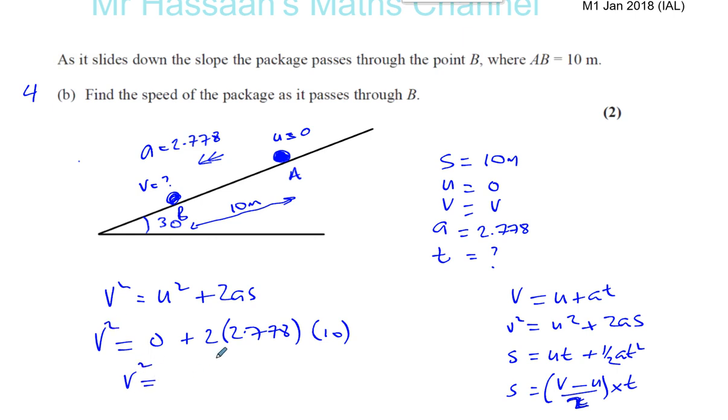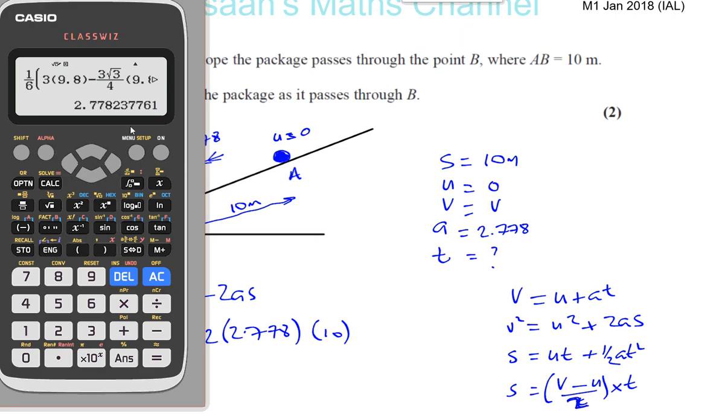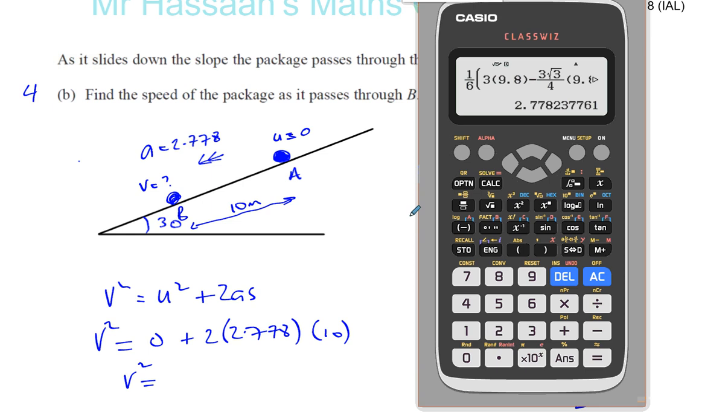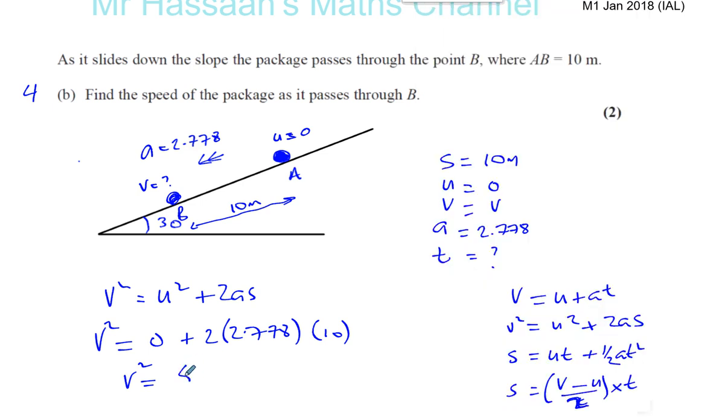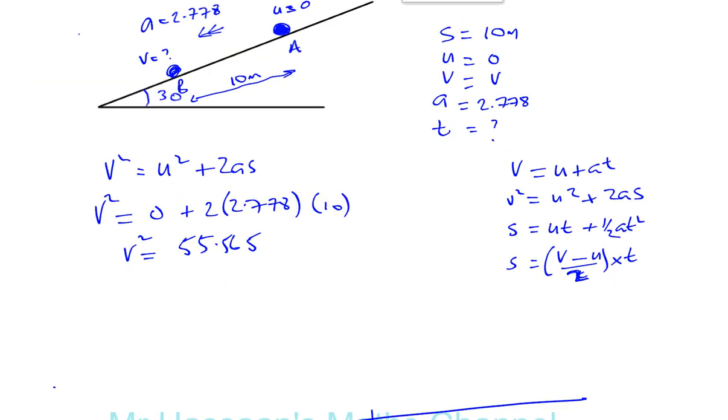So v squared is going to equal, we can use our calculator for this. We have 2.778, let's move it out of the way to see what we're doing. Times that answer is already in our calculator, times 2 times 10, so times 2 and times 10. Which gives us 55.5565.